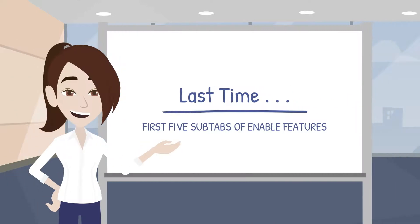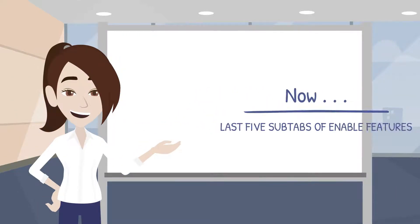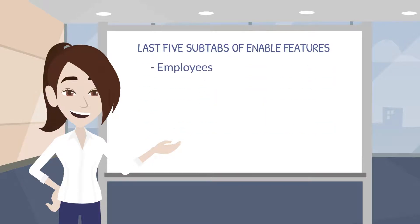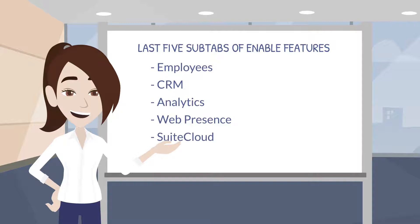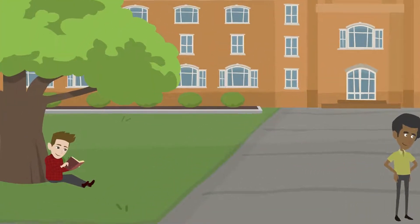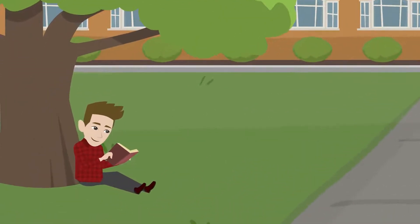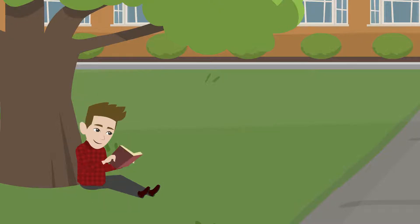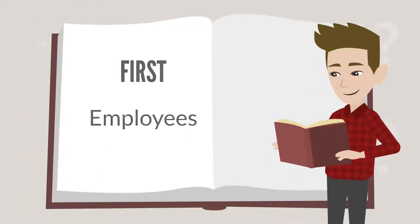In our last video, we looked at the first five subtabs under Enable Features. Now it's time to cover the last five subtabs: Employees, CRM, Analytics, Web Presence, and SuiteCloud. As we go, remember that the important thing is what each feature does, not where each feature is located. If you can't tell what a feature does from its name, be sure to look it up.